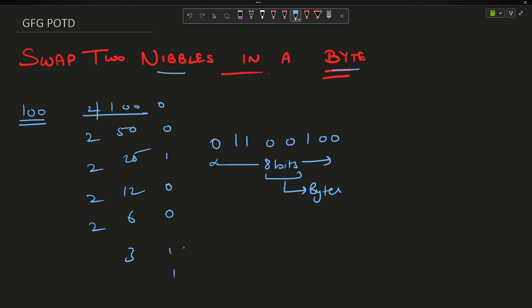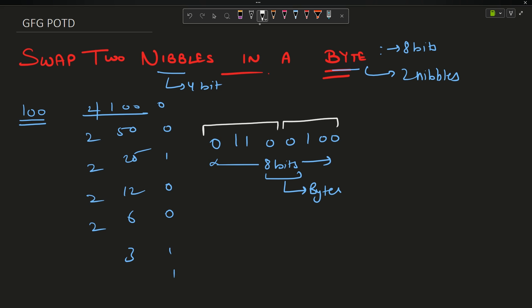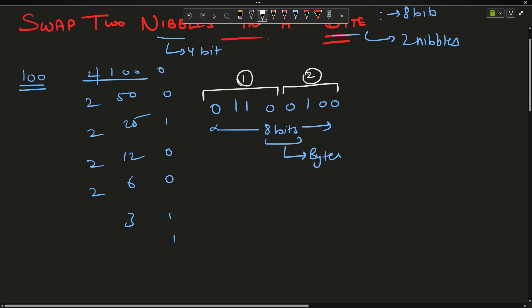A byte is a collection of 8 bits. Similarly, a nibble is a collection of 4 bits. By a simple division, a byte comprises two nibbles. In our example, the first nibble is 0 0 1 0 and the second nibble is the other 4 bits.